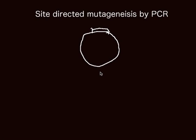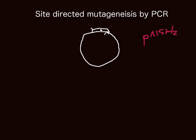Site-directed mutagenesis by PCR. Here we have the plasmid pMSH2, wild-type pMSH2. We have the MSH2 here. Let's say we want to change the position at 700 — that's the position of 700.